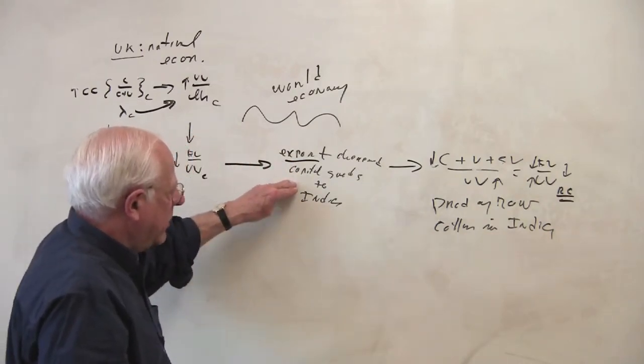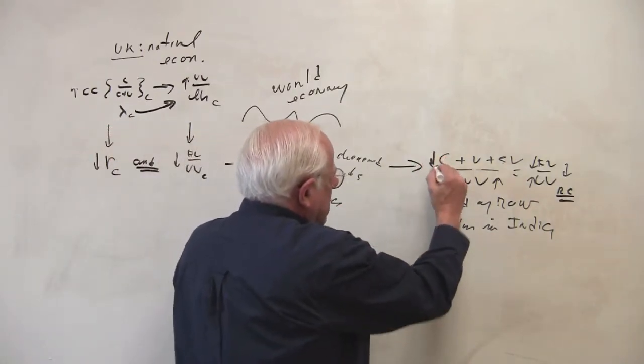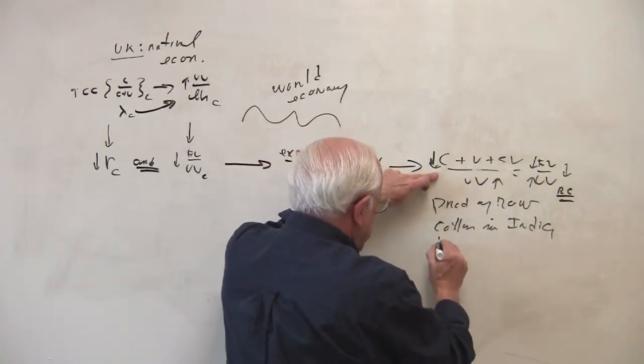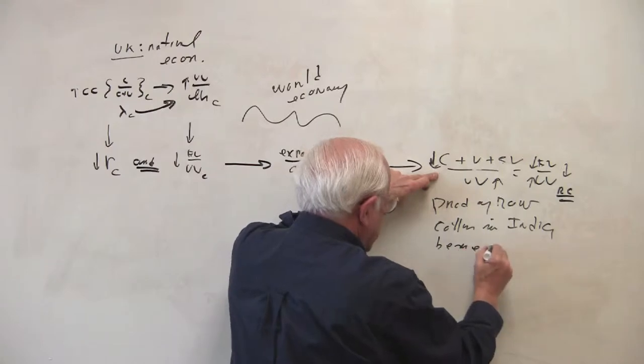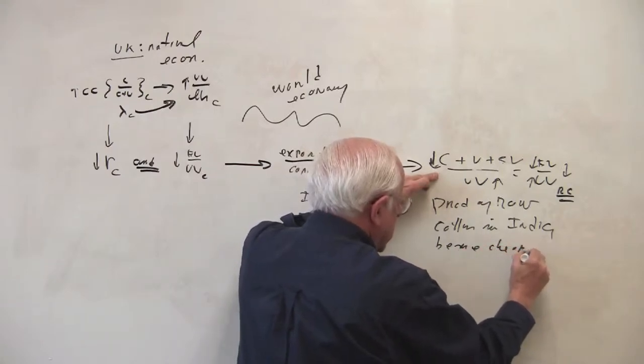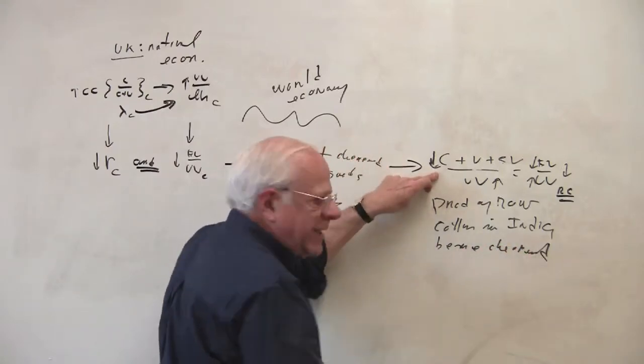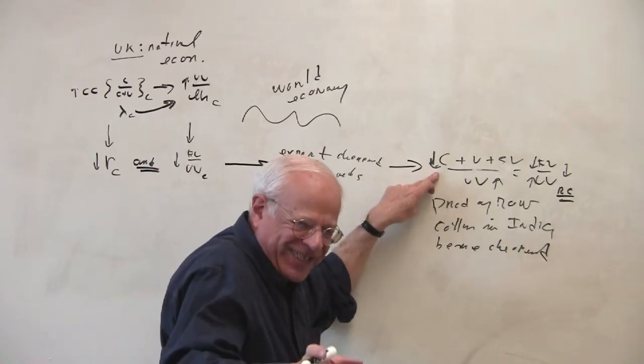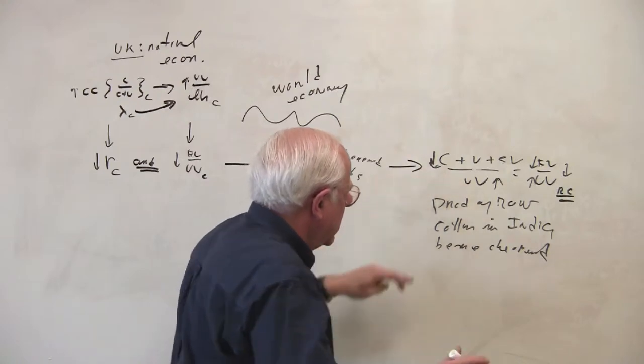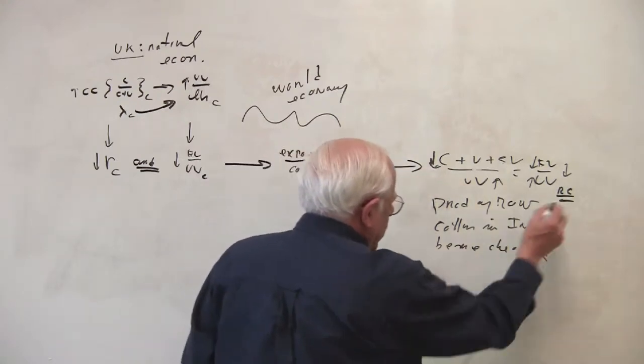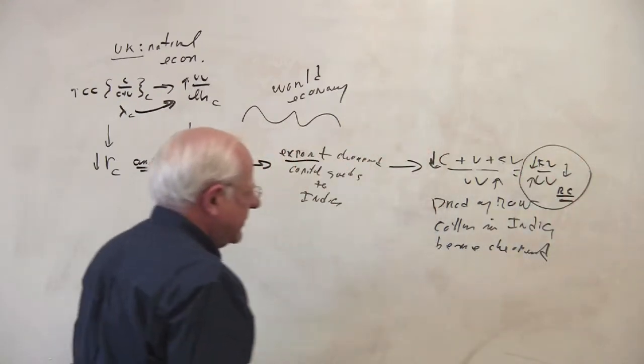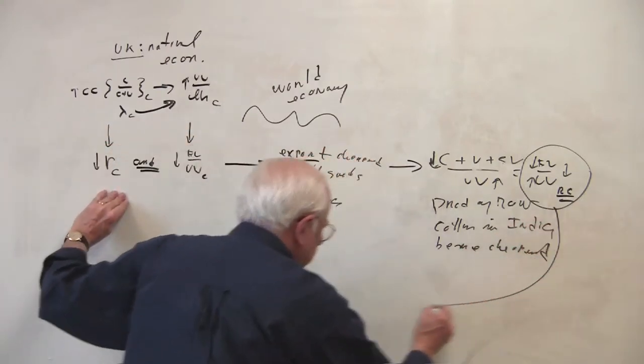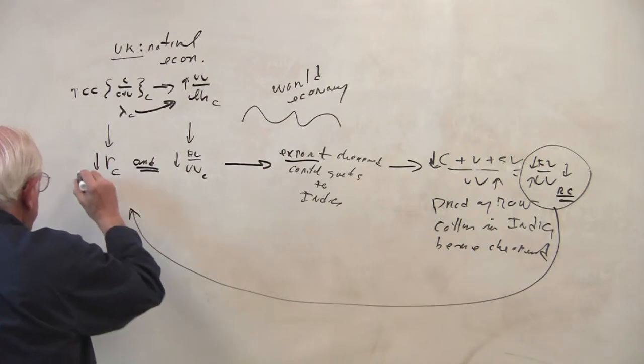So the export of cheapened capital goods is production of raw material and cotton becomes cheapened because of a fall in the import price. Right? The import price of fixed capital in India. That, in turn, then drops the price of the raw material. That feeds back to push this up.